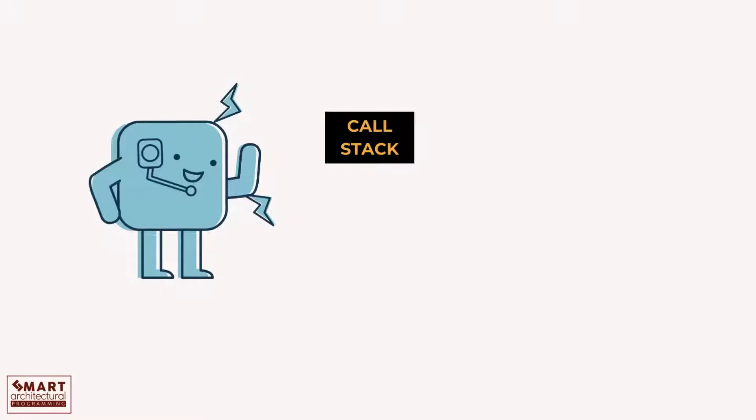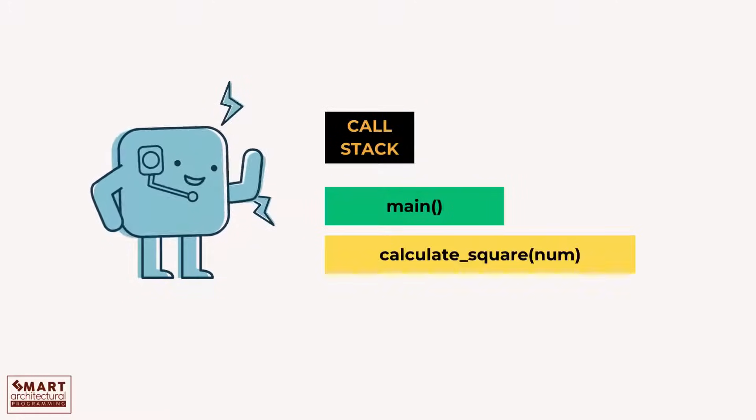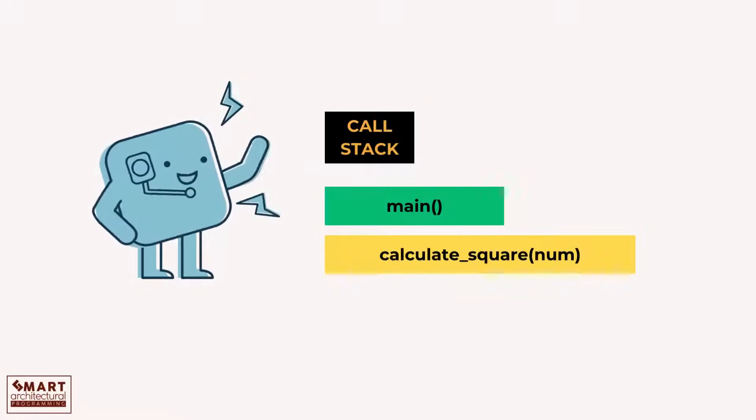Function calls. Let's say we have a main function calling another function, calculate_square, with an argument num.